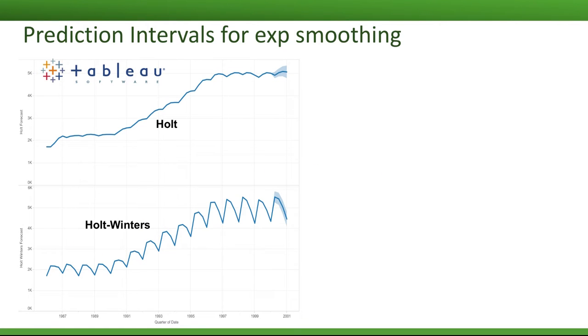Tableau's forecast option in the analytics tab actually uses exponential smoothing. It produces point forecasts, and you can ask for prediction intervals.